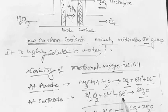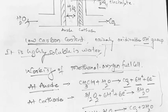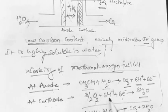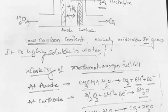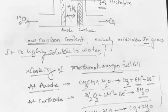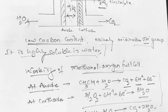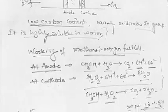The cathode reaction produces three water molecules. In the overall reaction, the six H⁺ ions and six electrons cancel out, and one water molecule cancels, leaving: CH₃OH + 3/2 O₂ → CO₂ + 2H₂O. This is the working of a methanol-oxygen fuel cell. The output from this cell is 1.3 to 1.5 volts.